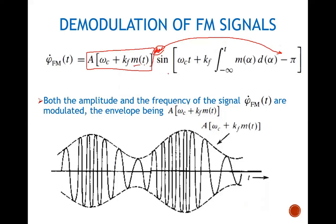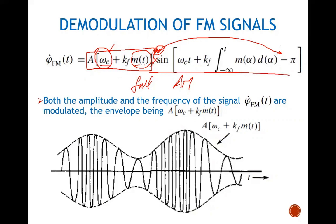After differentiation, the signal resembles a full AM signal. We have the baseband signal m(t) multiplied with a carrier, plus the constant term omega_c, which is the high-frequency carrier — and it is a constant term. Because of the appearance of this constant, the complete signal becomes a full AM signal. We can now detect the variations in the amplitude by using an envelope detector and retrieve our signal m(t).